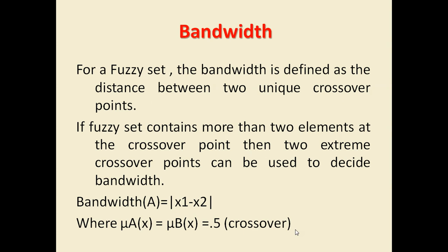Bandwidth is basically the difference or the distance between two crossover points of a fuzzy set. As I mentioned in earlier videos, the point which has a membership value of 0.5 in a fuzzy set is called a crossover point. So if there are elements in a fuzzy set whose membership value is 0.5, it could be one, two, or more — they will all be called crossover points.